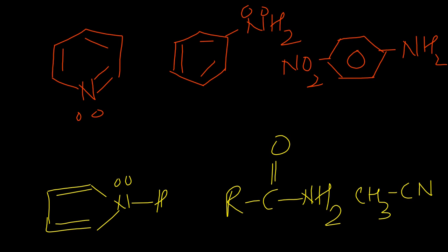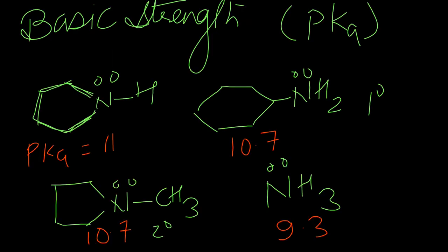CH3CN has a very low pKa. The pKa values are: piperidine 11, primary amines around 10.7, ammonia 9.3. Then pyridine is 5.2, aniline is 4.6, para-nitroaniline is 1, pyrrole is 0, amide is 1, and cyanide is minus 10.